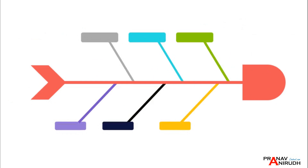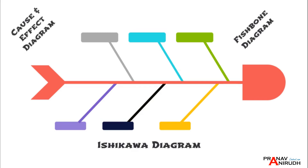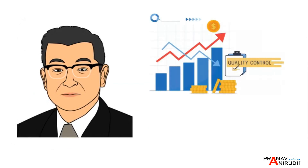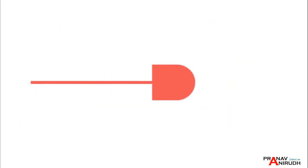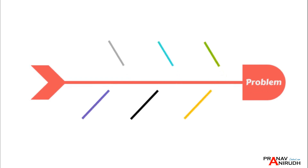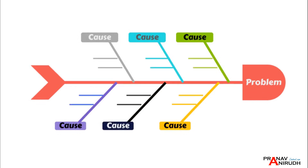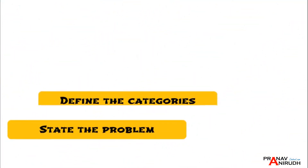The Ishikawa diagram is ideal for more complex problems that require a more in-depth analysis. Also known as the fishbone diagram or cause-and-effect diagram, it is named after Kaoru Ishikawa, a Japanese quality control statistician who first introduced the technique in the 1960s. The diagram represents the problem as the head of a fish skeleton, with the branches of the skeleton representing the potential causes of the problem. The causes can be broken down into smaller sub-causes, creating a comprehensive view of the problem and its potential causes.